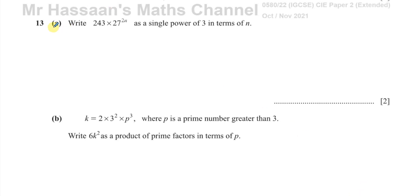Okay, now for question number 13 from the October-November 2021 paper 2 variant 2, 0580 syllabus from Cambridge. This is a question all about indices. It says write 243 times 27 to the power of 2n as a single power of 3 in terms of n.